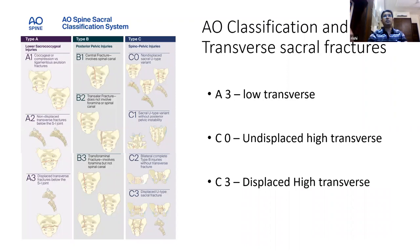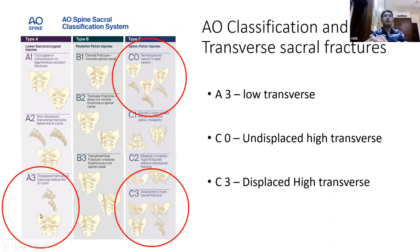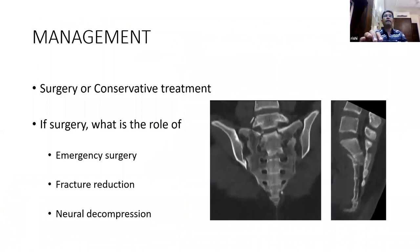Looking at the most recent AO/Evo-Spine classification of sacral fractures — classified into Type A, Type B, and Type C, similar to thoracolumbar fracture classification. Type A are simple innocuous injuries; A3 would be the lower transverse sacral fracture. Whereas Type C fractures are associated with gross instability of the spine and pelvis: C0 would be the undisplaced high transverse fracture, and the displaced high transverse fracture would be classified as Type C3.